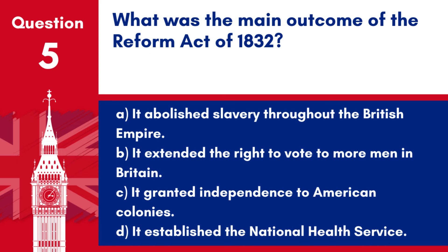Question 5. What was the main outcome of the Reform Act of 1832? a. It abolished slavery throughout the British Empire. b. It extended the right to vote to more men in Britain. c. It granted independence to American colonies. d. It established the National Health Service. Answer: b. The main outcome of the Reform Act of 1832 was the extension of the right to vote to more men, marking a significant step towards democratisation in Britain.